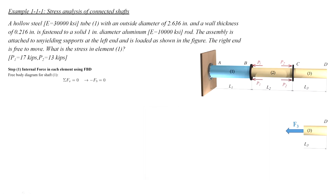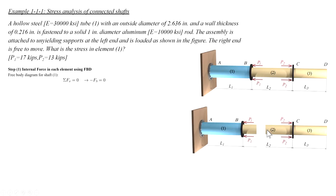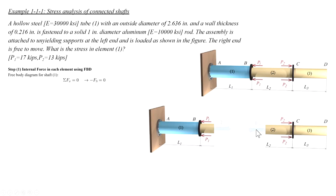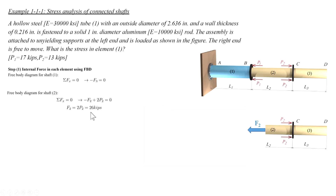Now let's do the same process for element number 2. We are going to cut it somewhere between B and C, put an unknown force F2 outward from the cut surface, and show the external forces acting on that element. There are two forces P2 acting at point C. The sum of forces in the x direction equals 0, so F2 is equal to 2 multiplied by P sub 2. The sign is positive, meaning the internal force is in tension.